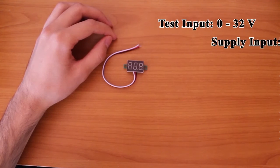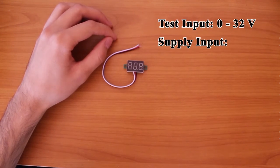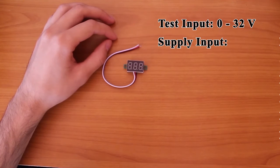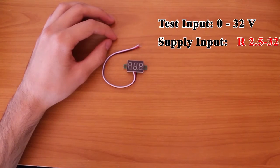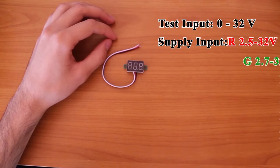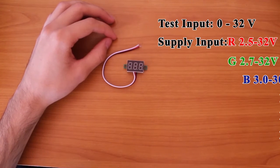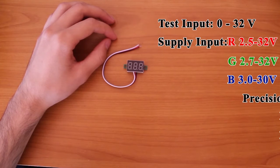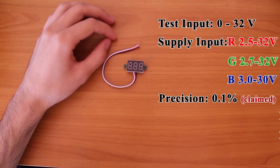The supply minimum voltage depends on the color of the LED display. For red it is 2.5 volts, for green it is 2.7, and for blue it is 3 volts. The precision is 0.1% and it has an input impedance of 100k.